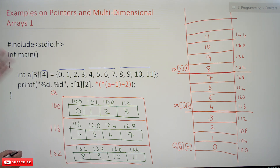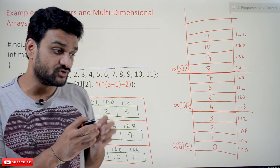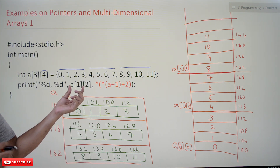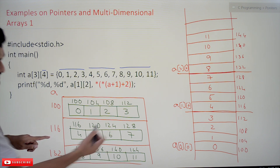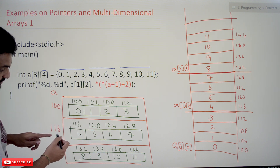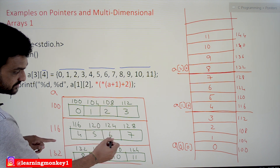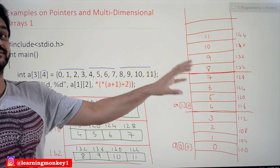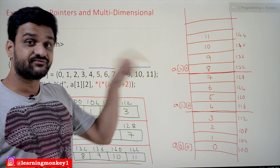To access elements of a multi-dimensional array, one way is using subscript notation. But if we want to use pointer arithmetic or address arithmetic to access the elements, we need to understand how that works. For example, a[1][2] means first row, third column (0-indexed), so the value 6 will get accessed. Using pointer arithmetic, we access it as *(*(a+1)+2), concepts you've already seen for one-dimensional arrays.